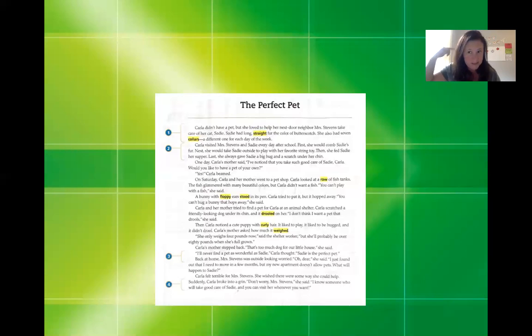Then Carla noticed a cute puppy with curly hair. Again, remember it has bends in it. It liked to play. It liked to be hugged and it didn't drool. Carla's mother asked how much it weighed. Remember, weighing is a verb that we do. We would put something on the scale. She only weighs four pounds now, said the shelter worker, but she'll probably be over 80 pounds when she's full grown. Carla's mother stopped back. That's too much dog for our little house, she said.